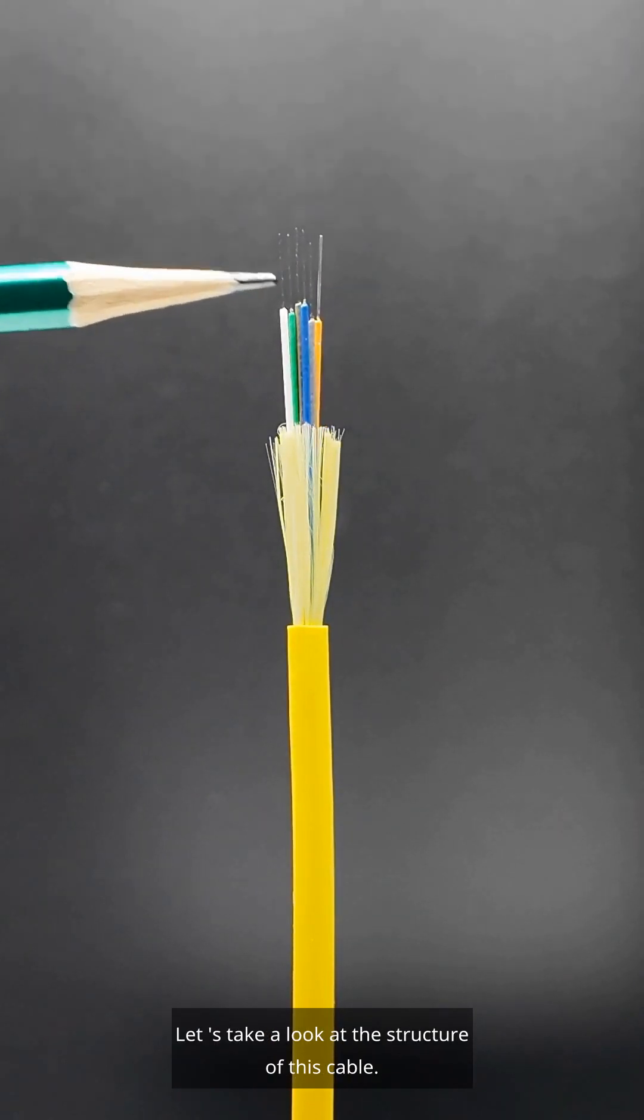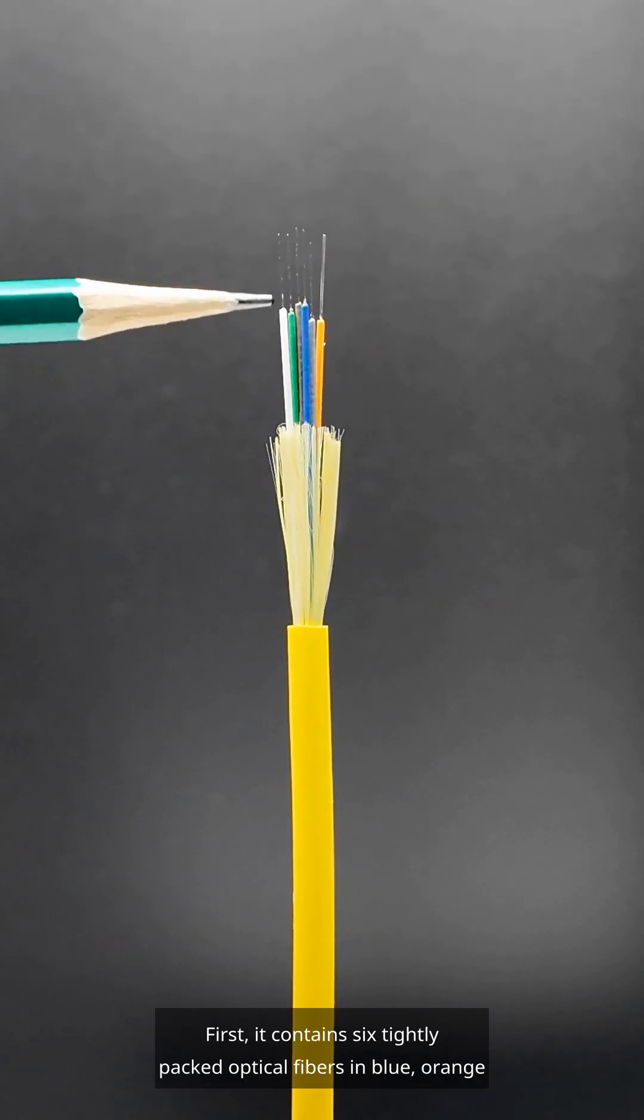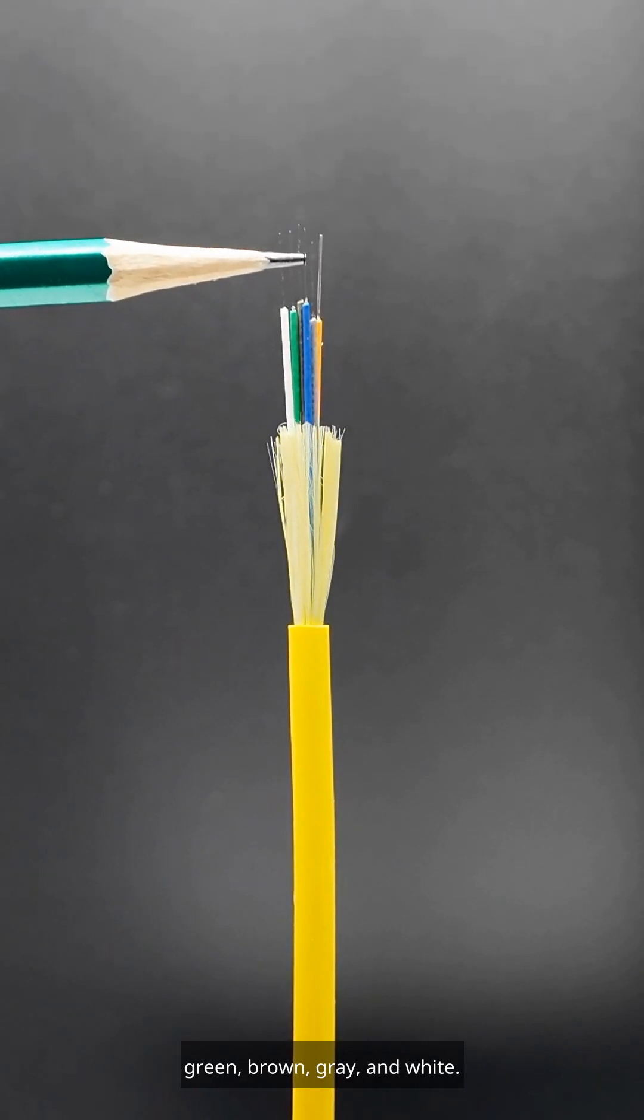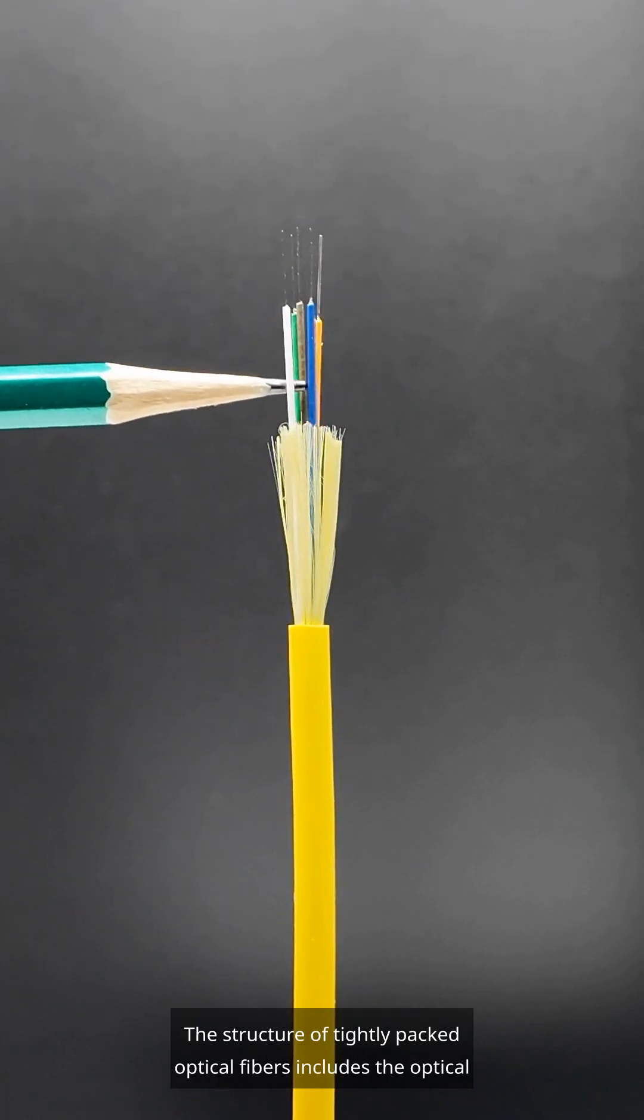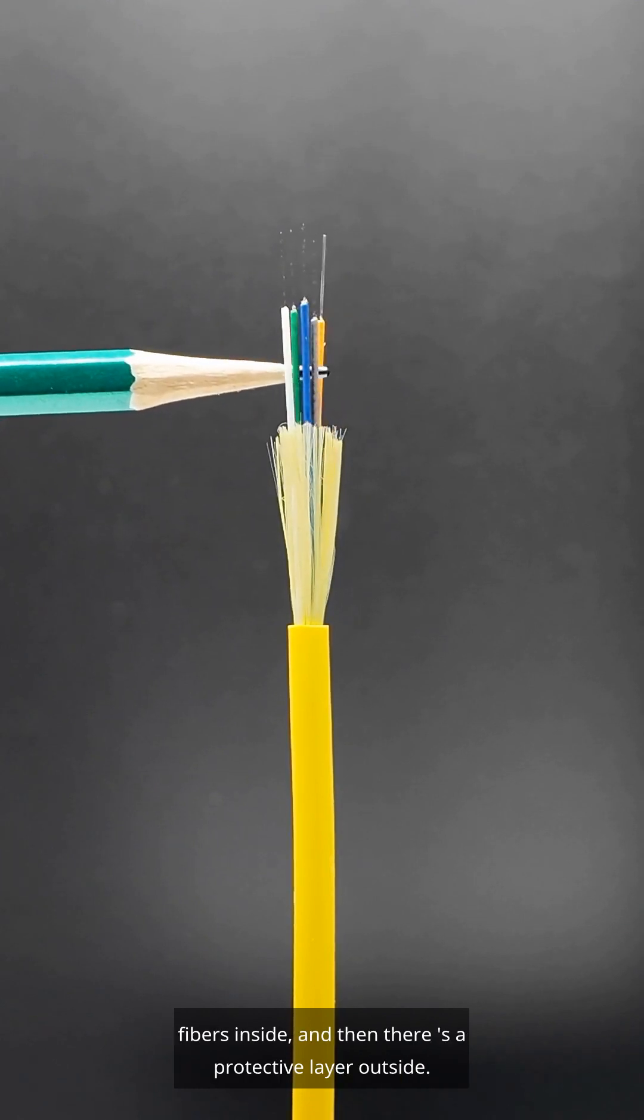First, it contains 6 tightly packed optical fibers in blue, orange, green, brown, grey, and white. The structure of tightly packed optical fibers includes the optical fibers inside, and then there's a protective layer outside.